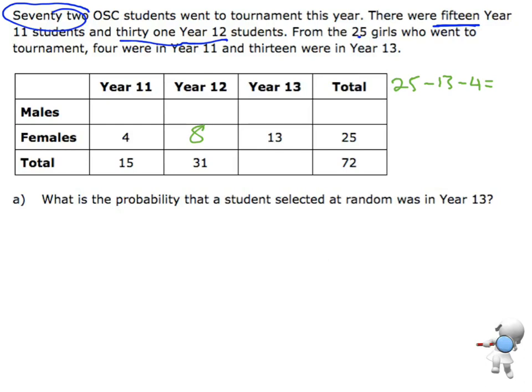Then I'll do the total column. The males plus the female total has to add up to the 72 students in total. So I can do 72 take away 25, and that gives me the number of males, which is 47. So I know I've got 47 males in total.